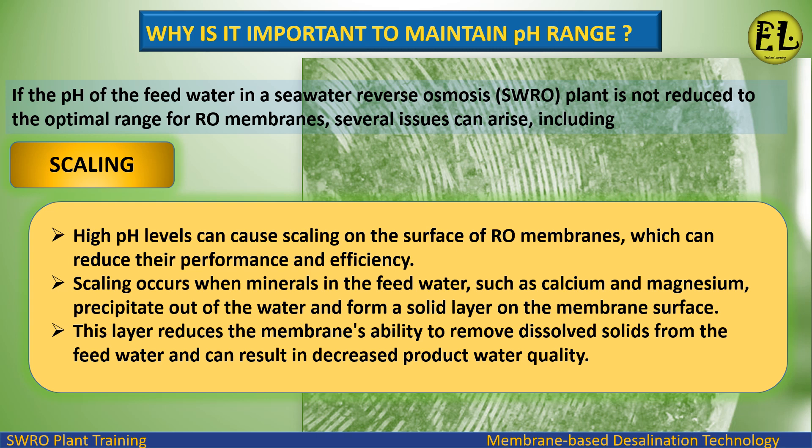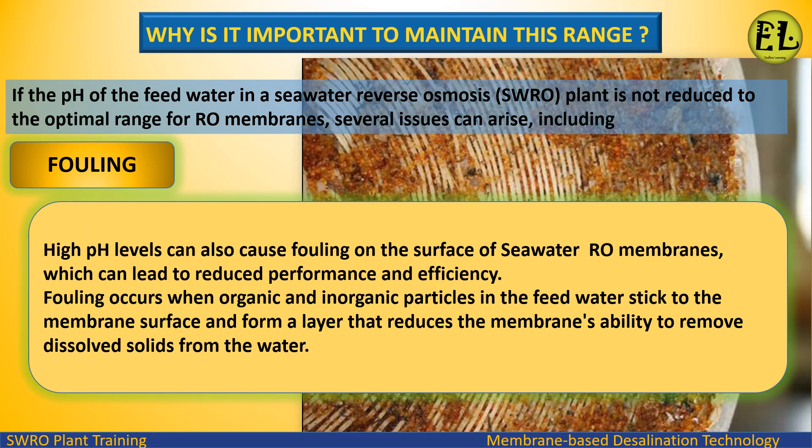Scaling occurs when minerals in the feed water, such as calcium and magnesium, precipitate out of the water and form a solid layer on the membrane surface. This layer reduces the membrane's ability to remove dissolved solids from the feed water and can result in decreased product water quality.